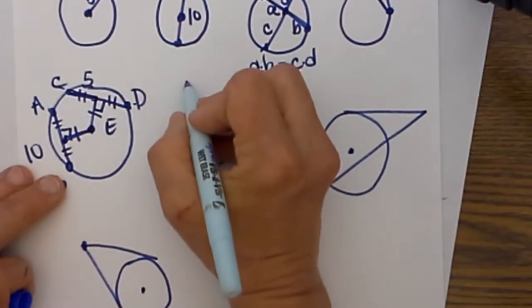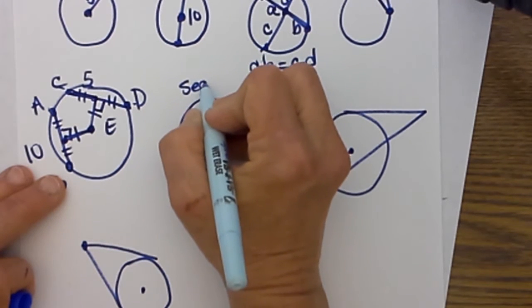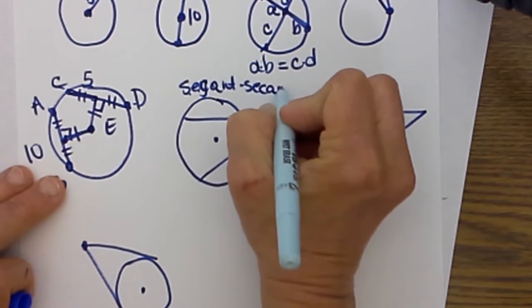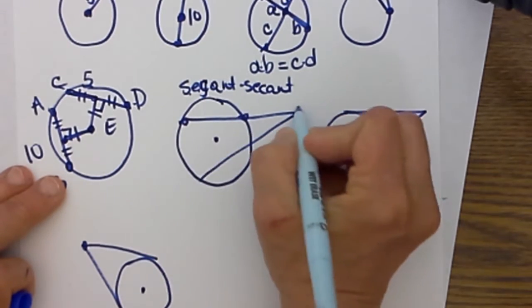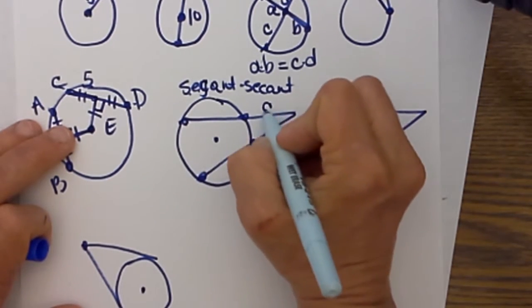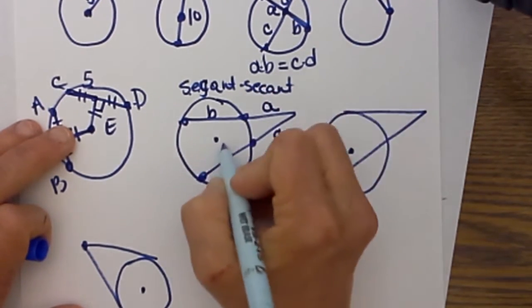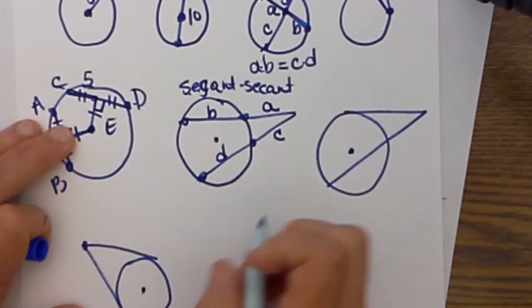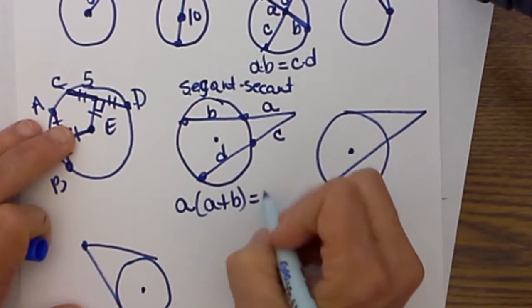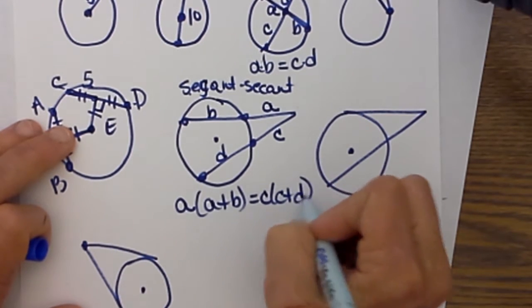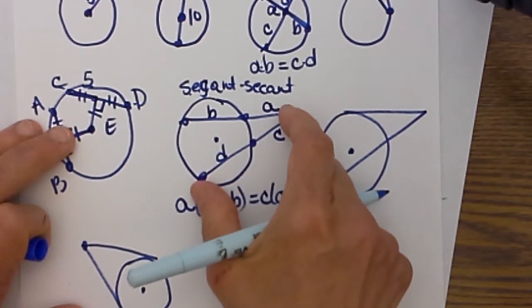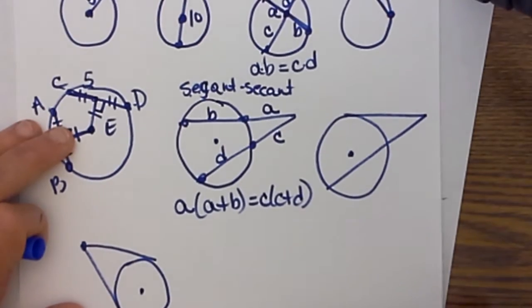The next one would be what we call a secant situation. A secant is a segment that goes through the circle and partially on the outside. So we have two secants here and we are going to label these parts A, B, C, and D. Those are secant segments as we call them. So we are going to take A times A plus B and we are going to set that equal to C times C plus D. In other words, you take the exterior segment times the whole segment and the exterior segment times the whole segment and set them equal to each other. We will do an example of that in a moment.